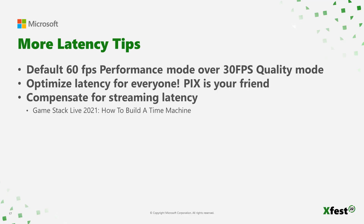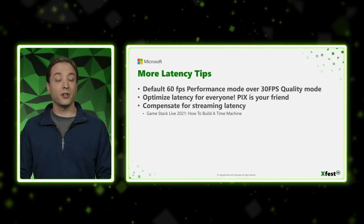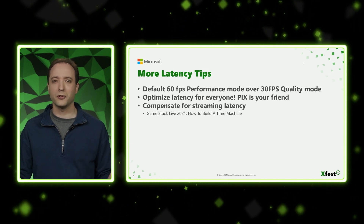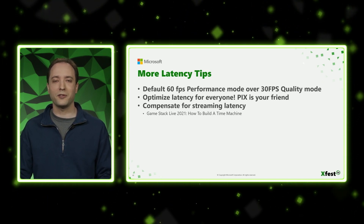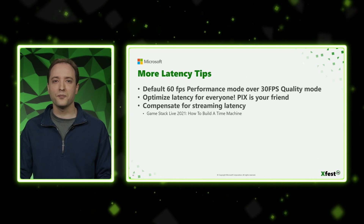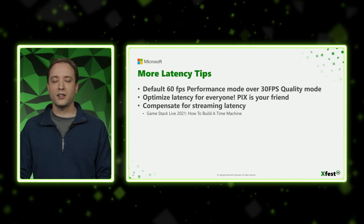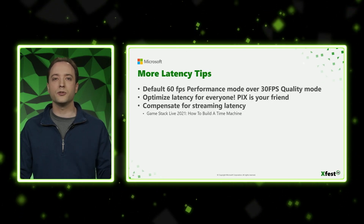A few more latency tips. If your game has a 60 FPS performance mode and a 30 FPS quality mode, we recommend defaulting to the 60 FPS performance mode when your game is streaming — your streaming players will appreciate that it's a little bit snappier. If you're able to optimize latency for everyone, console players and streaming, everyone's going to appreciate it. Pix is your friend — it's my favorite tool for diagnosing latency issues. And finally, I have to give a plug for my old GameStack Live 2021 talk on YouTube called 'Compensating for Streaming Latency: How to Build a Time Machine,' which talks about how to compensate for whatever latency you do have while streaming.